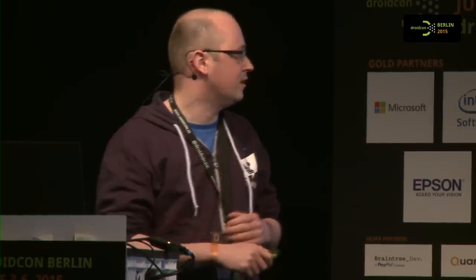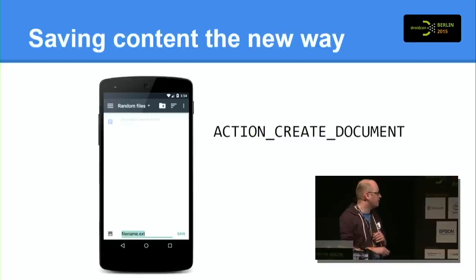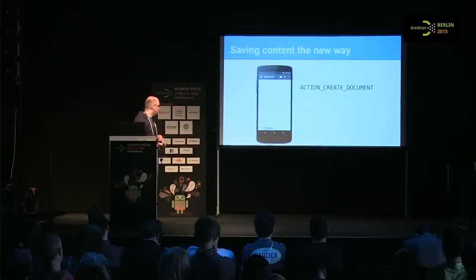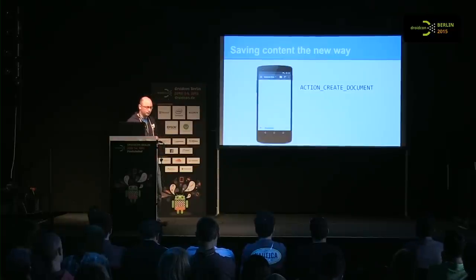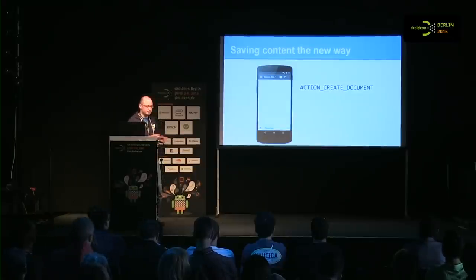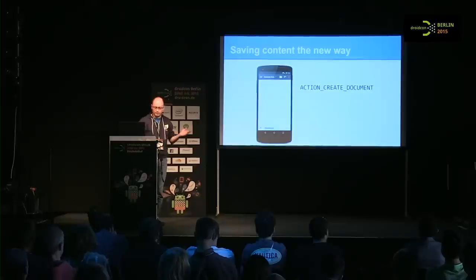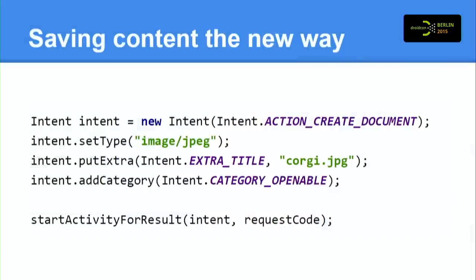The new way is the createDocument action intent, which displays the familiar storage access framework UI. You see the directory listing, random files, a filename field at the bottom, and a save button. You get back a URI you can use to write content, and the system transparently moves it to the document provider — uploaded to the cloud, written to local storage, or however the provider handles it. Much like before, you specify the action, a MIME type, and you can specify a title as the suggested filename — the user can still change it. In this case we have corgi.jpg.